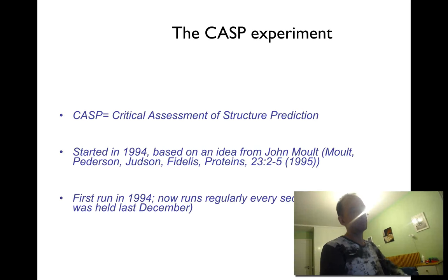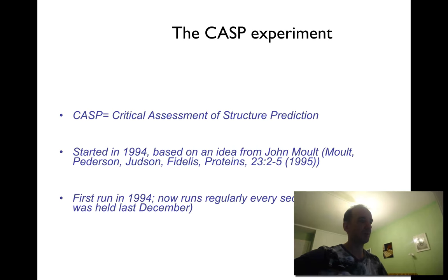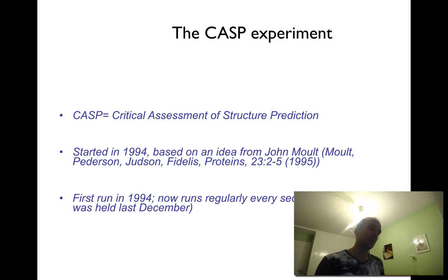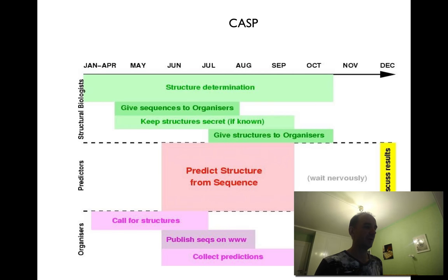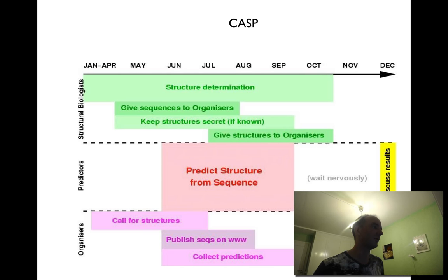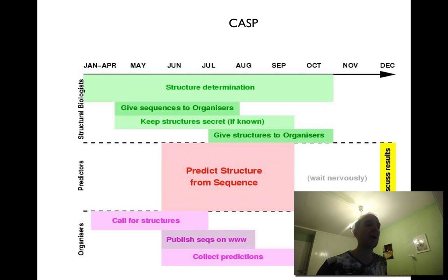An interesting aspect of structure prediction has been CASP experiments. It started in 1994 and one of the key persons has been John Moult. It's been running every two years since then. The whole idea of CASP is that you should predict the structure from a sequence without anyone knowing how the structure looks — it would be a blind prediction. And that's the only fair test.